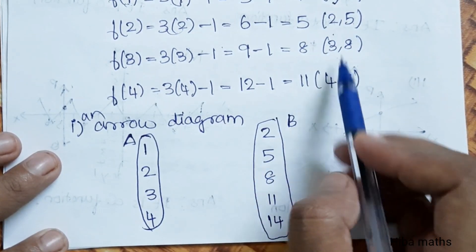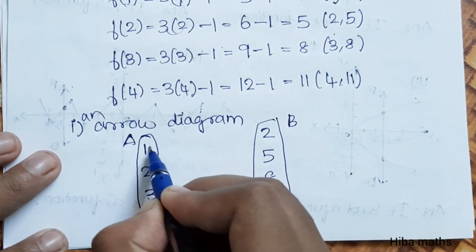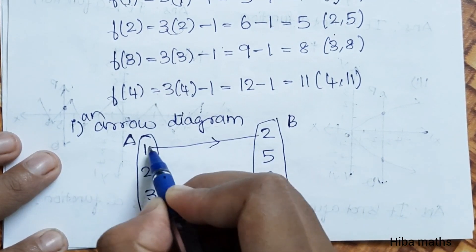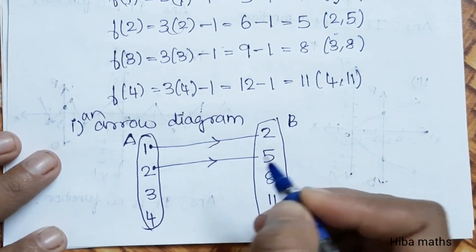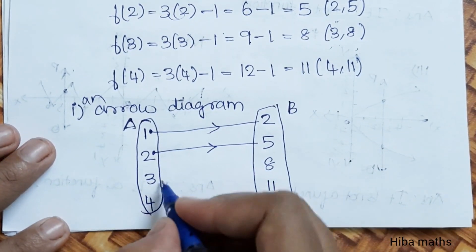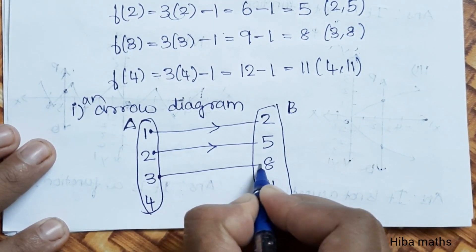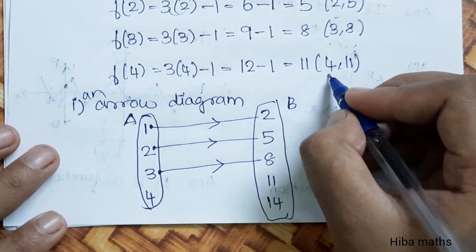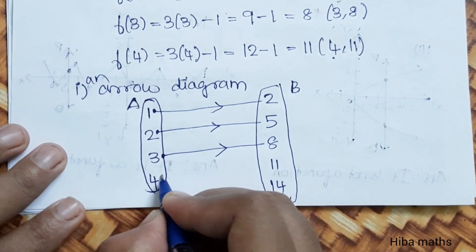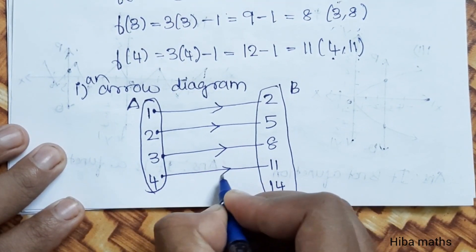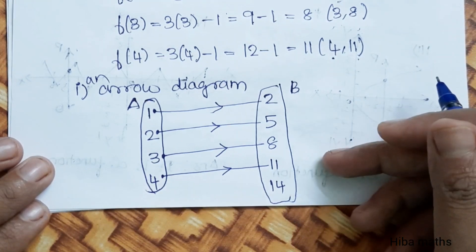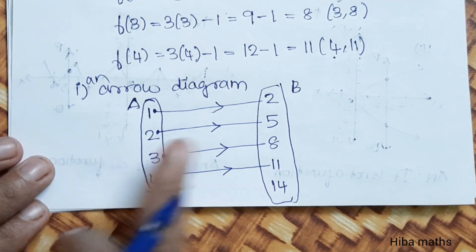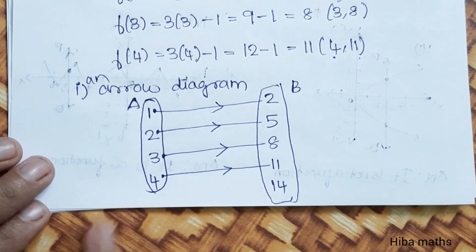We have to draw the mapping arrows: 1 maps to 2, 2 maps to 5, 3 maps to 8, and 4 maps to 11. So we get one mark for this. If you have 4 parts, solve each for one mark. Arrow diagram is one mark — check.